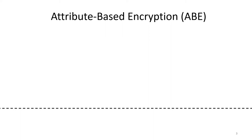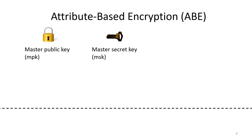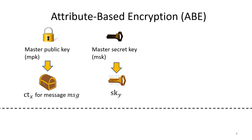Even though our main interest is on inner product encryption, let me explain more general notions of attribute-based encryption, or ABE in short. In ABE, there are master public key and master secret key in the system. The former is public, while the latter is hidden. Using the master public key, one can encrypt a message for some attribute x. Using the master secret key, one can generate a secret key for some attribute y. The decryption should be possible if x and y satisfy some relation R.